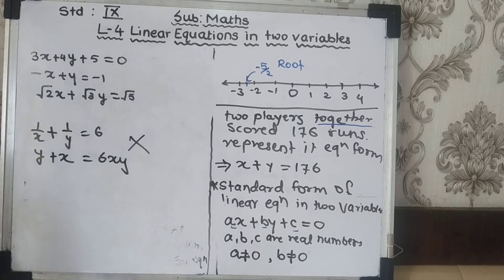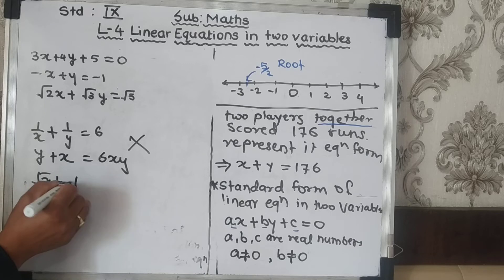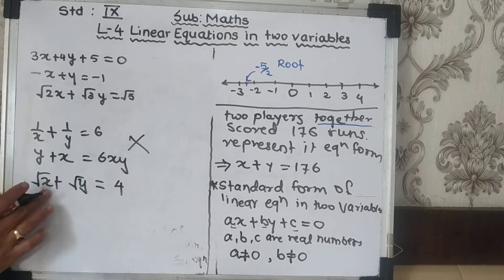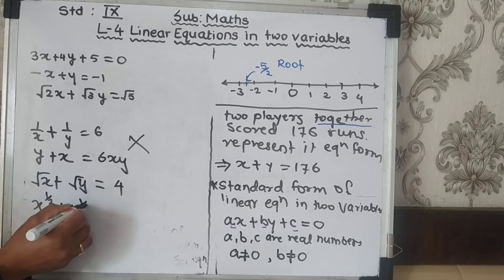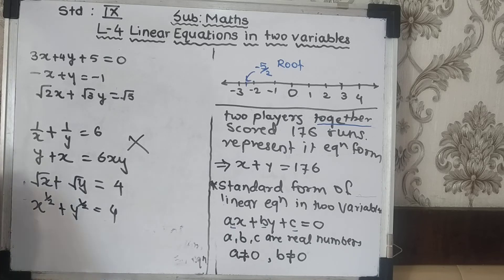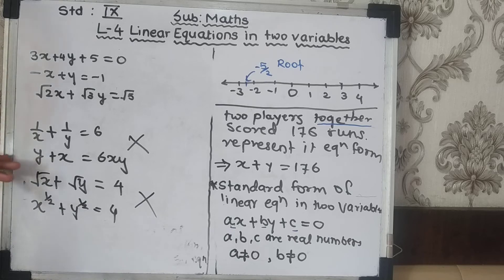Similarly, √x + √y = 4 is not a linear equation in 2 variables. The power of x would be 1/2, and on simplification we get a power greater than 1. That's why we will not consider such equations under linear equations in 2 variables.